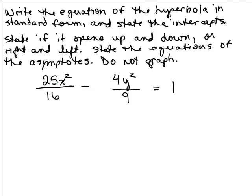All right, here's the problem where we're given an equation that at first glance looks like it's in standard form but it's not. And we're not going to graph it. What we're going to do is put it in standard form, state the intercepts, state whether it goes up or down or right and left, and then state the equations of the asymptotes. All right, so let's go for it. Why is this not in standard form? Think about that. It's equal to 1. So that part, it's all good. But there's another problem.